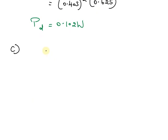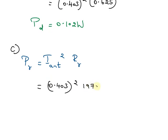We can find out the power radiated by the antenna by using the formula PR equals current in antenna squared into RR. Here, we can substitute the values: 0.403 whole square into 197.3.